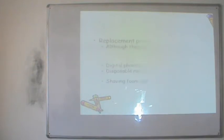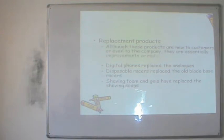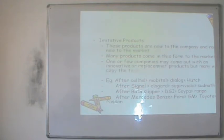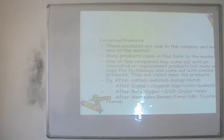Replacement products are new to the customer or company but are essentially improvements or redesigns of existing products. When a company wants to take the easier course rather than creating a totally new product, they go for drastic or minor improvements to existing products. For example, digital phones replaced the analog market, disposable razors replaced blade-based razors, and shaving foam and gels have replaced older formats. Imitative products are neither new to the world nor new to the market — consumers already know about them. When one or a few companies come out with an innovative or replacement product, many others start copying the technology or come out with a similar product. For example, when Mercedes-Benz launched luxury sedans, Ford followed, then General Motors, Toyota, and Nissan — these are imitative products.